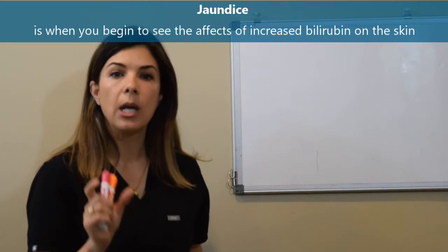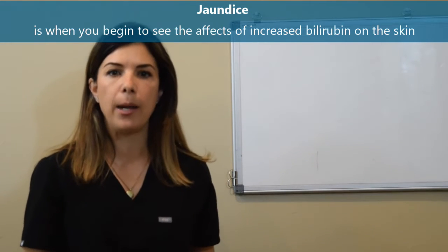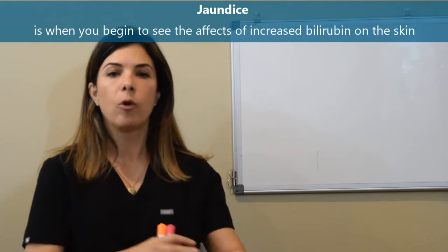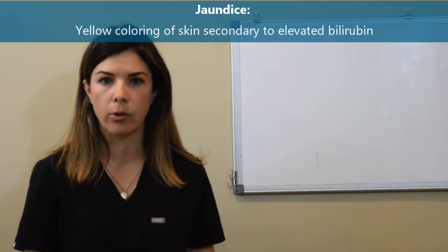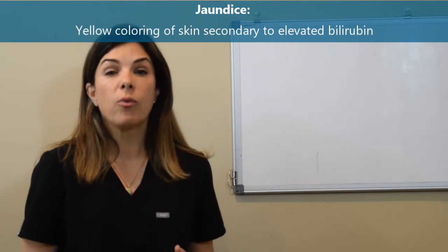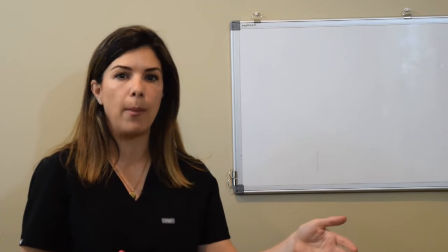The term jaundice just means that you are seeing the effects of that high bilirubin on the skin so jaundice by definition means that the skin has a yellow coloring to it. You can really have jaundice when you have pretty severe hyperbilirubinemia. The bilirubin might be a little bit elevated but you might not have jaundice.